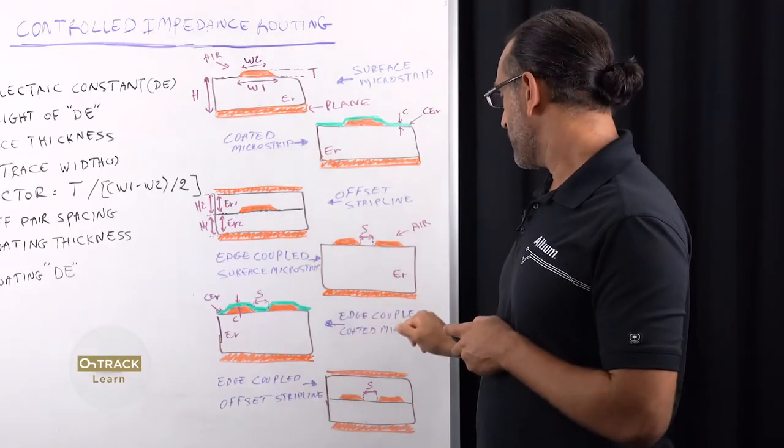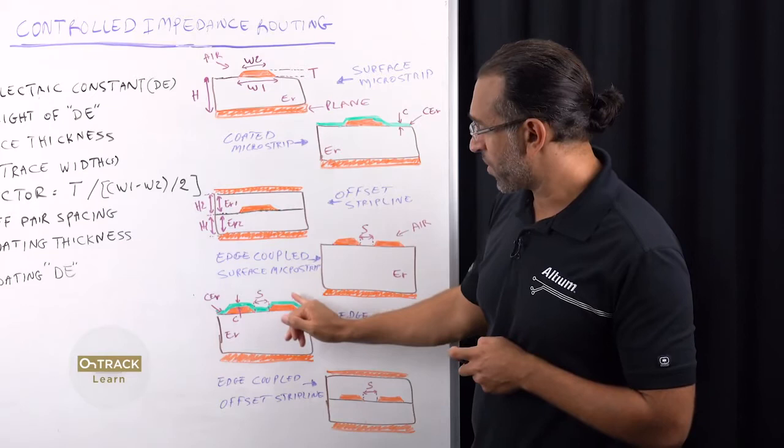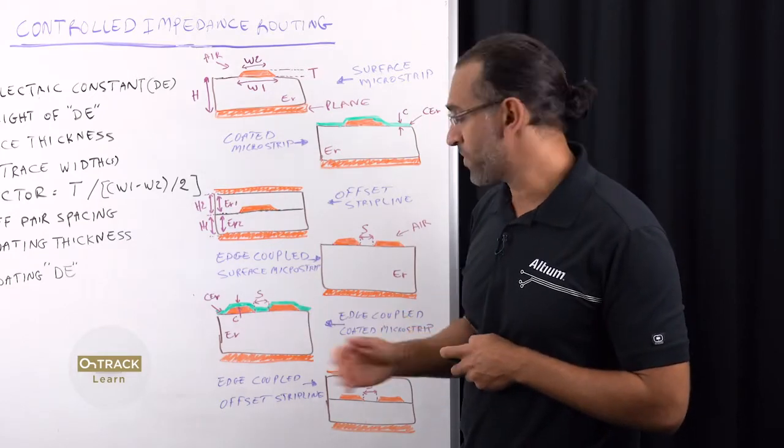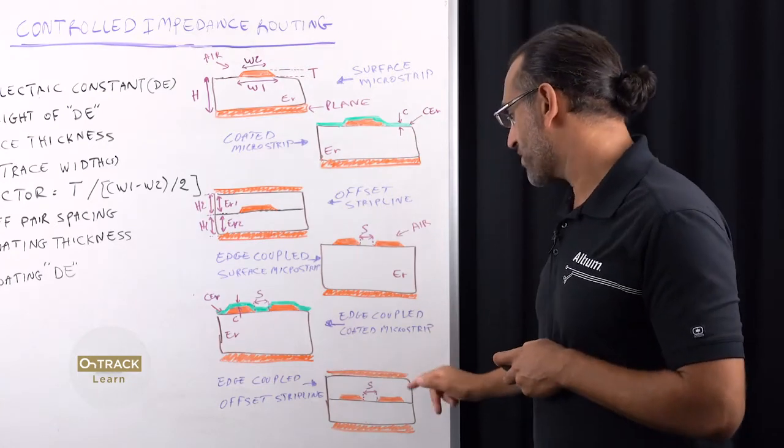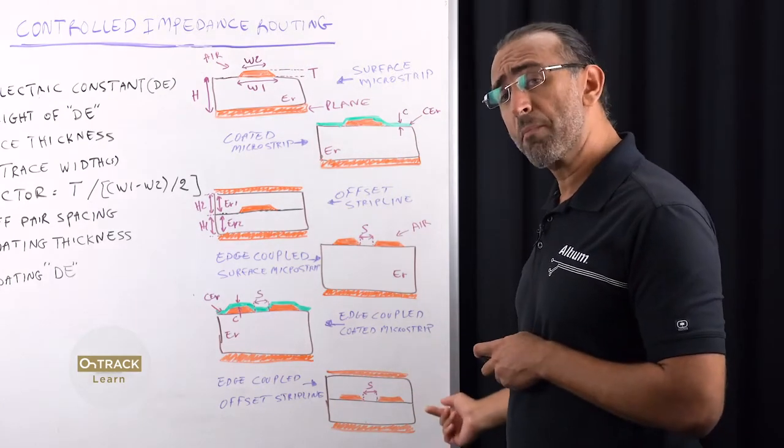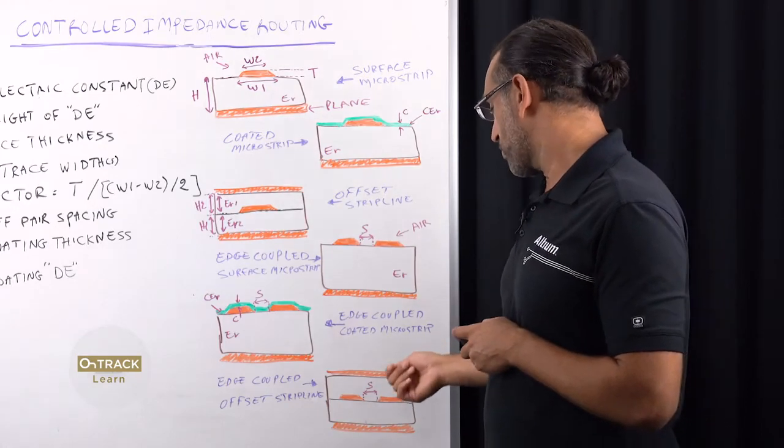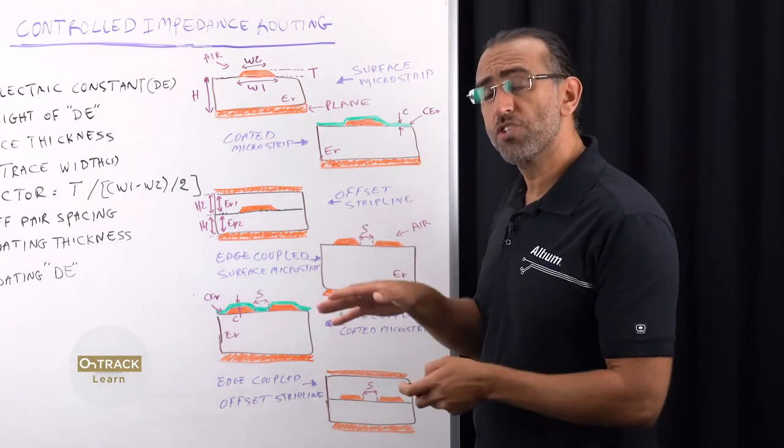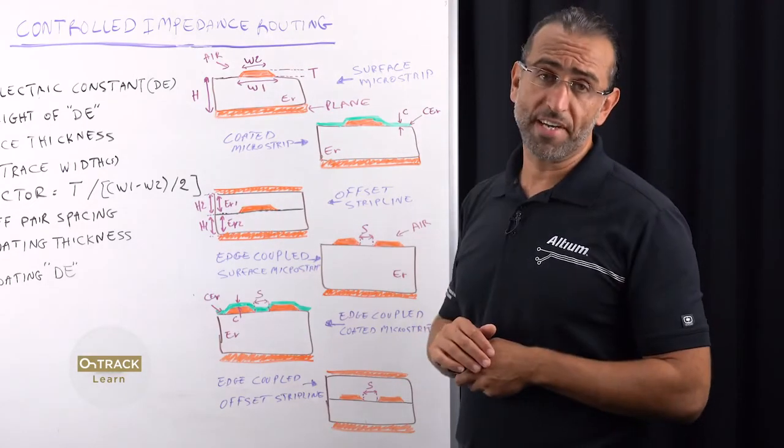And the edge coupled coated microstrip is similar to this one here, except that you have a solder mask that you have to account for because it's not exposed to air. And we also have the edge coupled offset stripline, which is a differential pair, the configuration tracks that need to be controlled in terms of impedance that are sandwiched inside the PCB and shielded by two planes, one from each side.